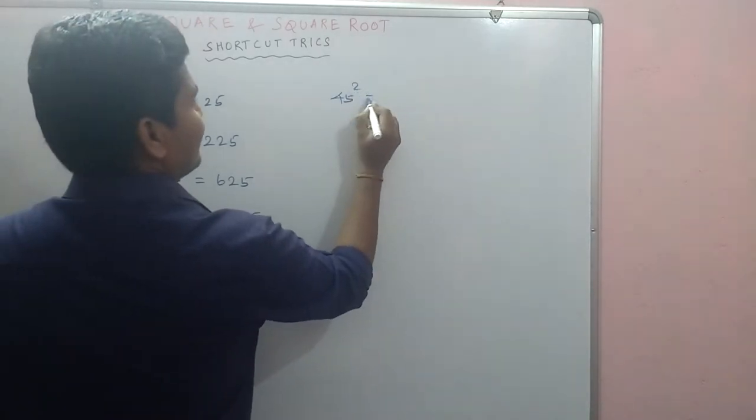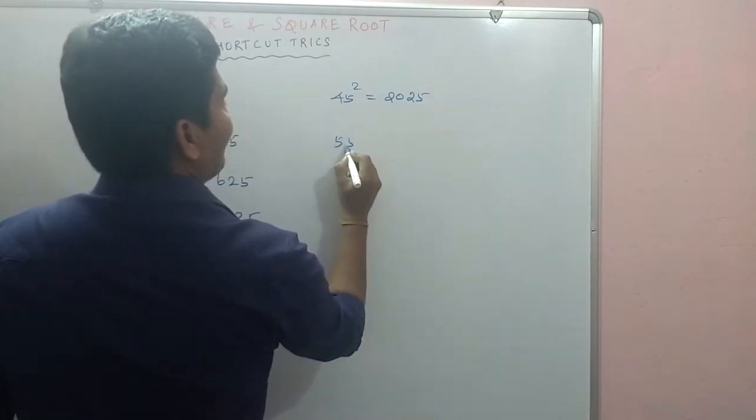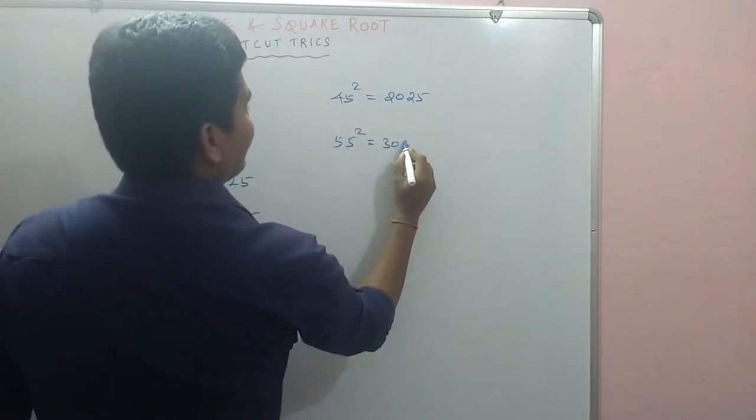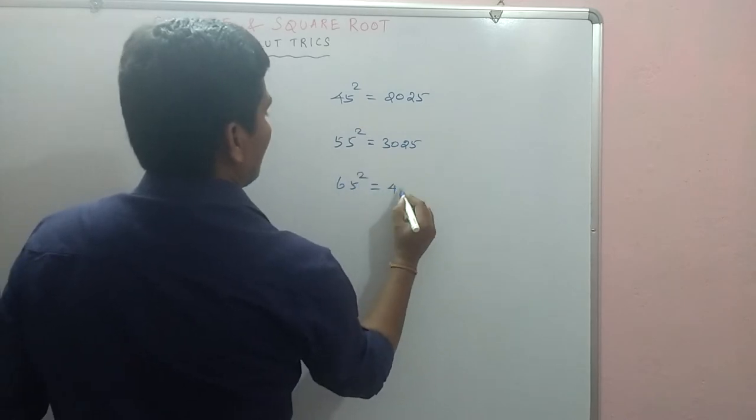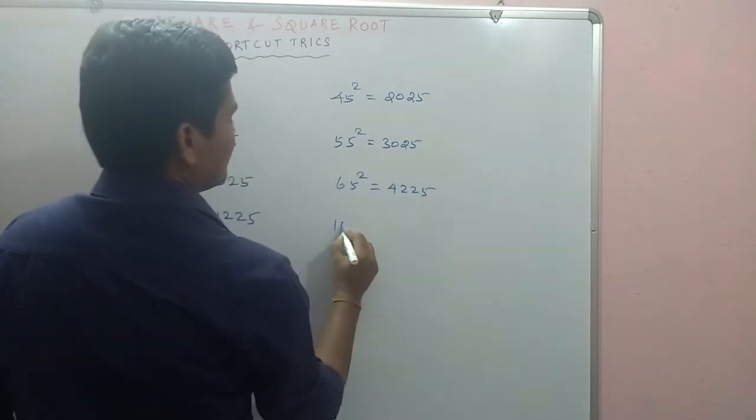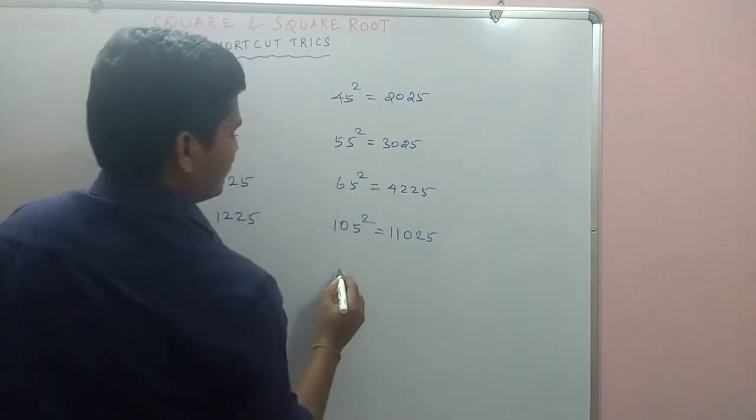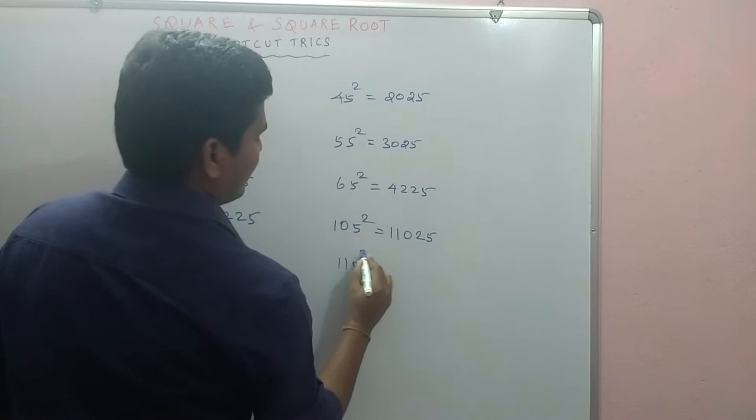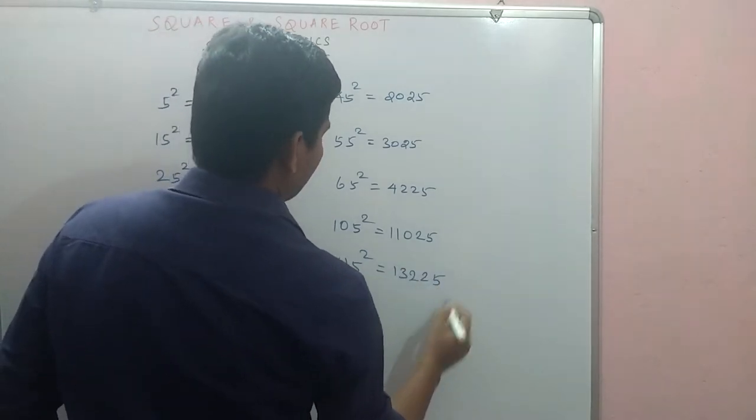45 square is 2025. 95 square is 9025. 65 square is 4225. 105 square is 11025. 115 square is 13225.